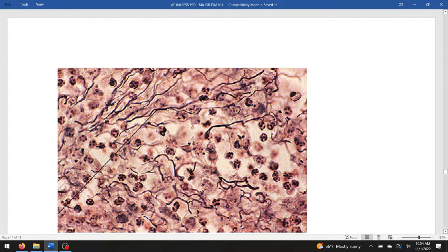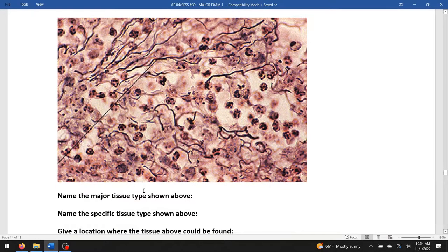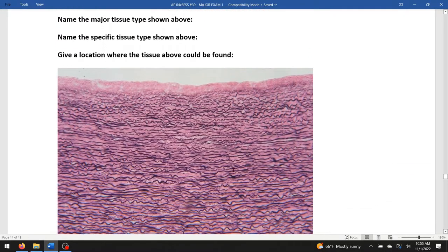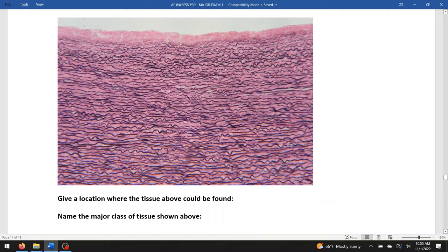What do you see here? I got cherry blossoms immediately. Name the major type: connective. What's the specific type? Cherry blossoms tells me reticular tissue. Give a location: lymphatic structures like lymph nodes or the spleen. I see a lot of little wiggly worms. This is elastic tissue. Where the location is: wall of a giant artery, probably the walls of a large artery. Name the major class: connective tissue. Specific class is elastic tissue.